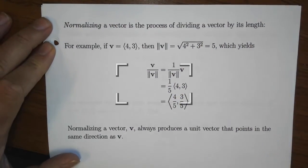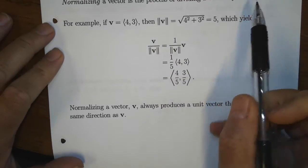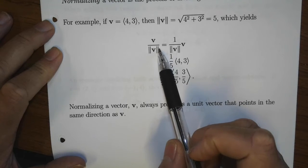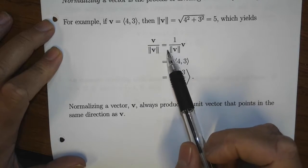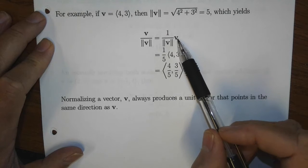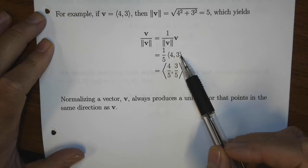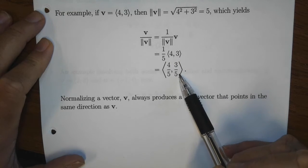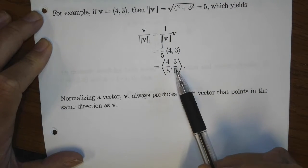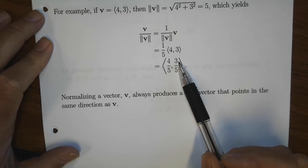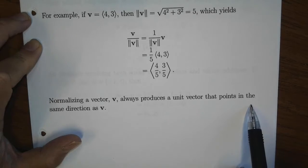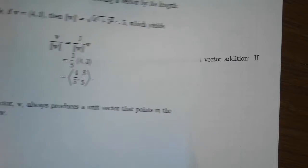Another important operation is normalizing a vector. Take a vector like ⟨4, 3⟩, compute its length (which is 5), then divide the vector by its length — equivalent to scalar multiplication by 1/5. So (1/5)⟨4, 3⟩ = ⟨4/5, 3/5⟩. If you compute the length of ⟨4/5, 3/5⟩, you get 1. Normalizing a vector means dividing it by its length to produce a new unit vector of length 1. We'll do this frequently throughout the semester.